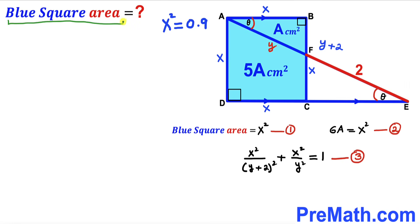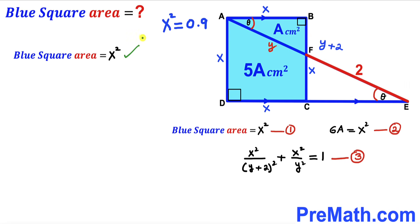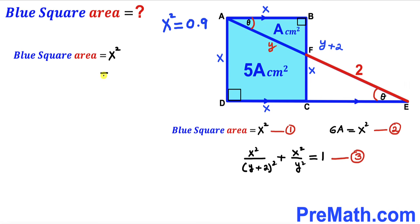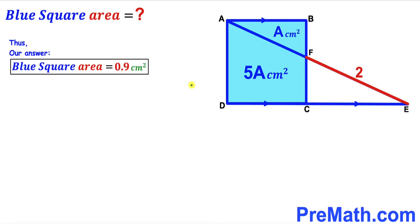Now for the final step: the area of the blue square equals x², from equation 1. We found x² = 0.9, so the area of the blue shaded square ABCD is 0.9 cm². That's our final answer. Thanks for watching, and please don't forget to subscribe to my channel for more exciting videos. Bye!